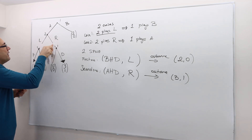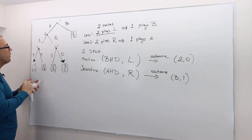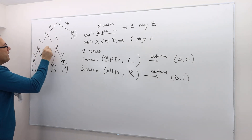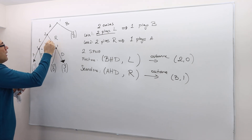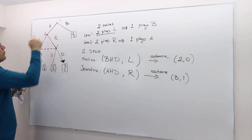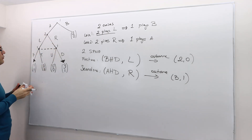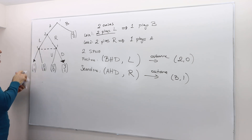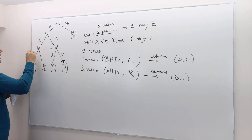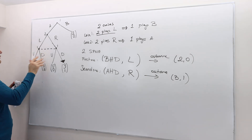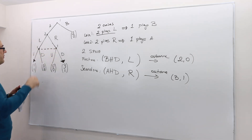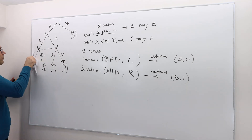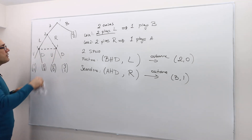This is a game with imperfect information, so player one cannot observe player two's move. Obviously, we cannot write h-t-u-d here because player one cannot distinguish these two decision nodes — it's going to be u-d, u-d.